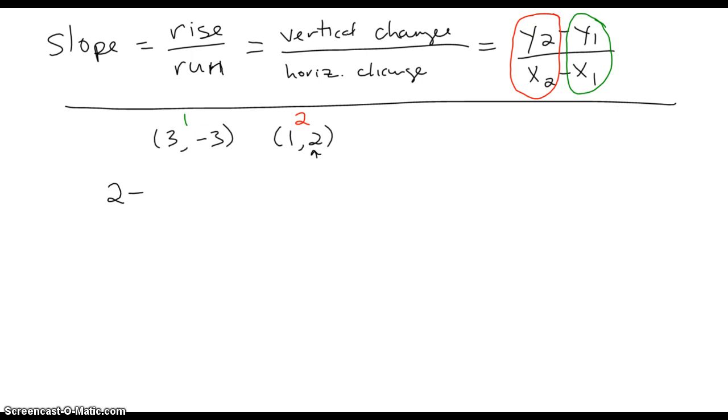That's this point right here, this value right here. This is the y value of 0.2, minus the y value of 0.1 here, which is a negative 3, over the x value of our second point, which is a 1, minus the x value of our first point, which is a 3.